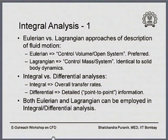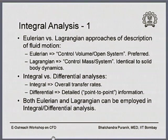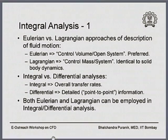Many of you will probably recall that we employ Eulerian and Lagrangian approaches of description of fluid motion in fluid dynamics. If you talk about the Eulerian approach, what we are doing is referring to a control volume or an open system sort of approach, and typically this is the preferred approach in fluid mechanics. The Lagrangian approach will essentially involve a control mass, or equivalently what people call in thermodynamics as a systems approach, which is identical to solid body dynamics in the sense that we are always talking about the same material or the same mass which we follow in the fluid domain. Whereas in the Eulerian approach, we identify a control volume which is a region of space within the domain, and we monitor what changes are happening because of the fluid flow in and out of that control volume.